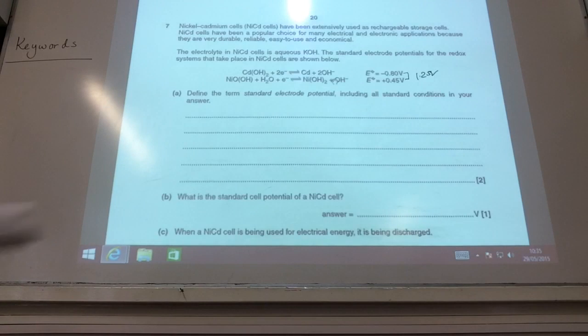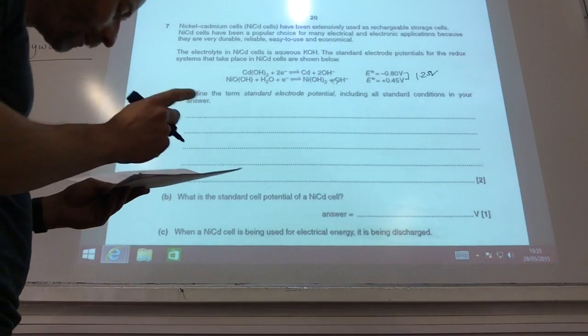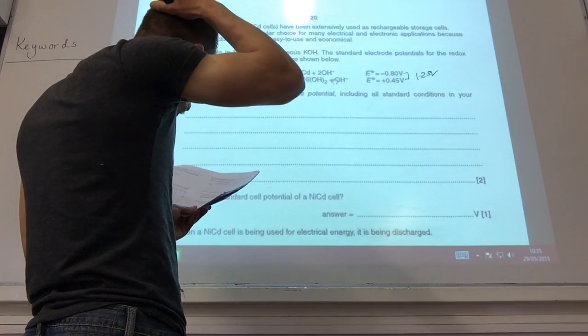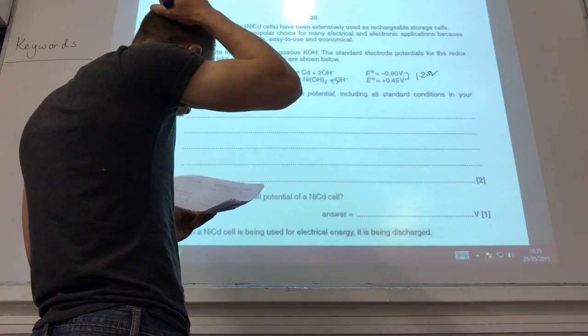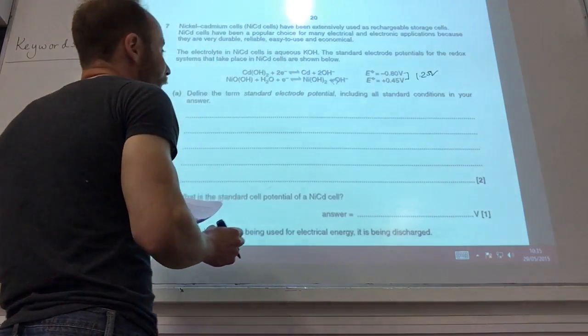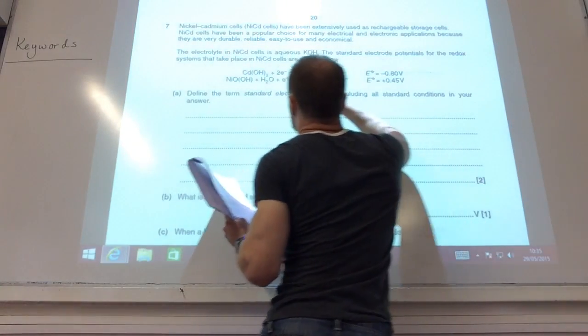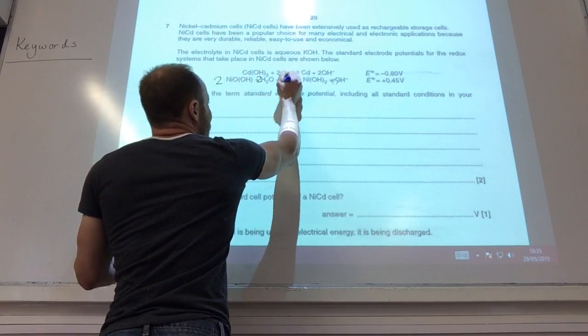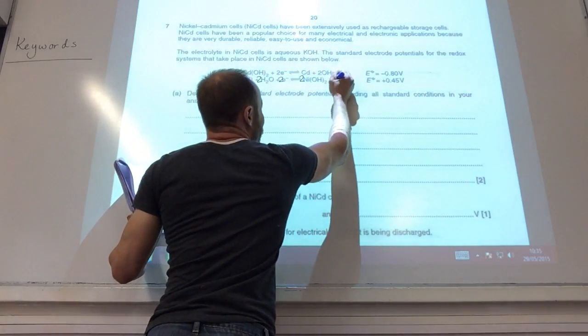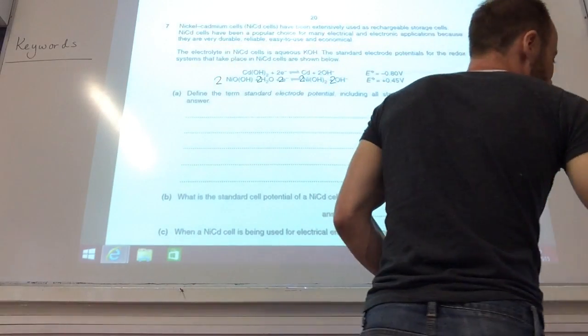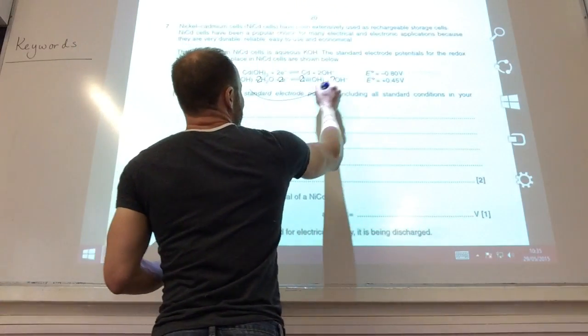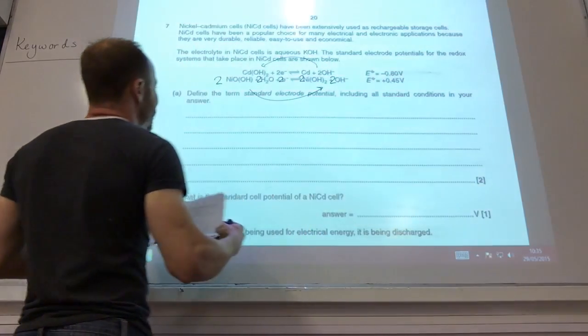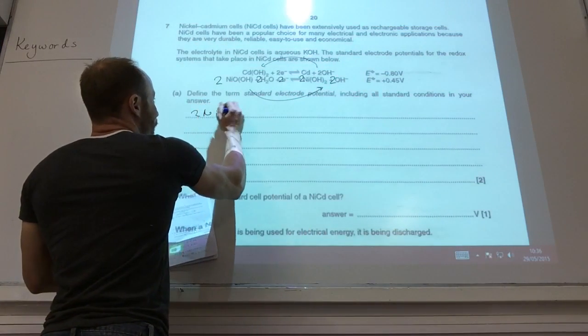Using oxidation numbers, construct an overall cell equation that takes place during the discharge of this cell. So I need, you've got two electrons there but only one electron there. So first of all let's times this one by 2, like so. That one is going to go that way because it's most positive. That one will go that way.